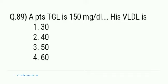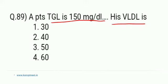We will go into the question. The question is simple: if a patient's TGL is 150 mg per deciliter — that is, his triglyceride is 150 mg per deciliter — what will be his VLDL, very low density lipoprotein? The options are 30, 40, 50, and 60.